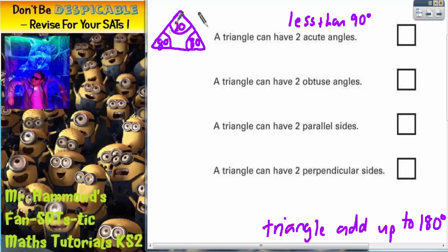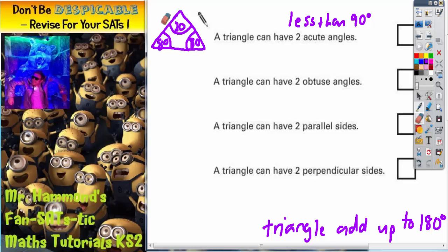However, so it does work. However, it says in the statement two acute angles, and this actually has got three acute angles because they're all less than 90. So that one won't work for this statement. It is a possible triangle, but not for this statement because we need to only have two acute angles. So let's try again.